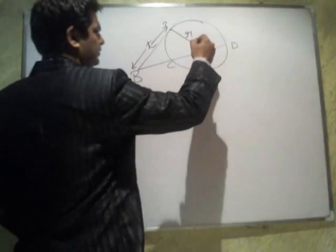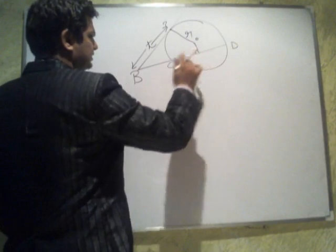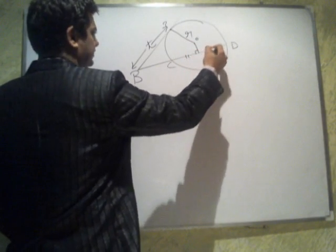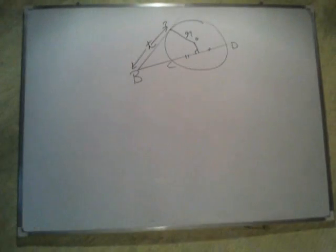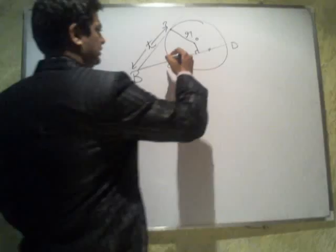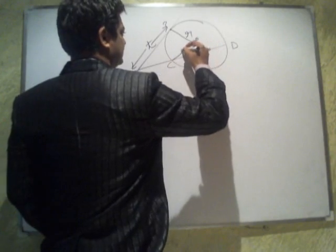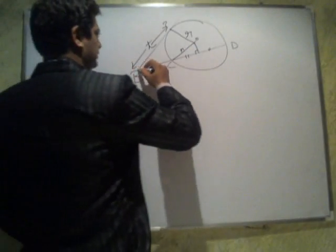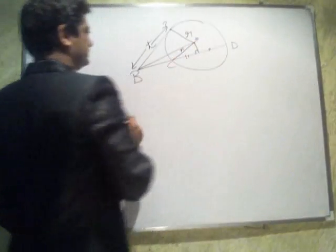And if you drop perpendicular from this point to this CD as a chord, it will bisect it, as we know that perpendicular from the center to the chord bisects the chord. And this is radius as well.